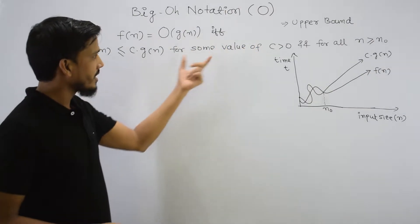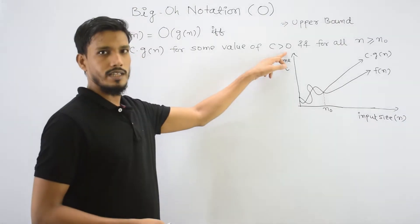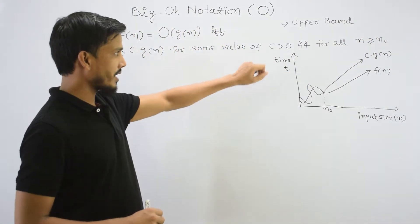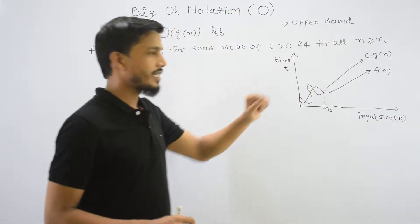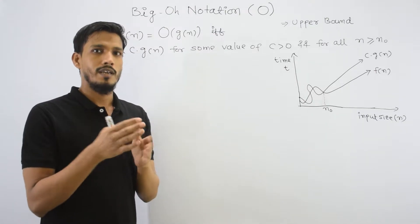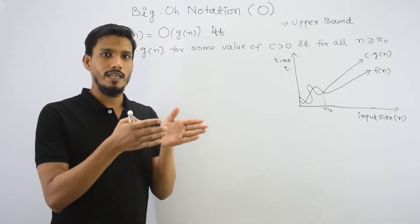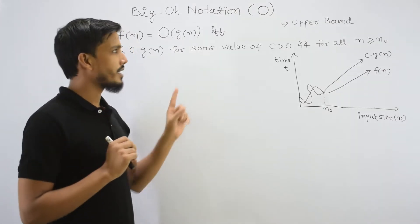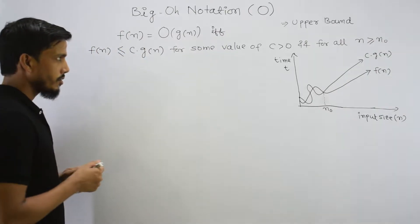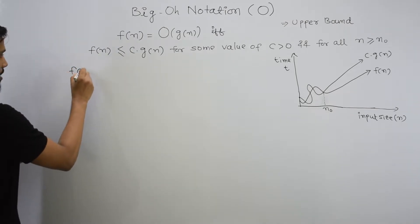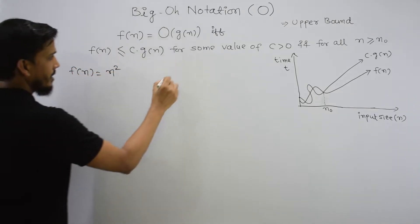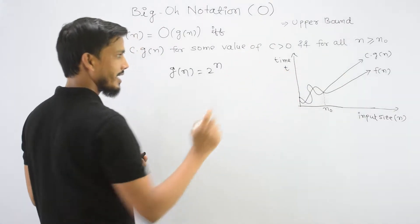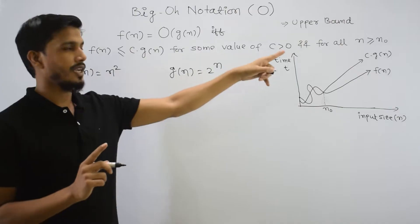The equation f(n) = O(g(n)) is satisfied if and only if f(n) is less than or equal to c dot g(n). This holds for some value of c that is strictly greater than 0 — that is, c is a positive constant — and for all n greater than or equal to n₀. The important things to understand are: what is c, and what is n₀, where n is the input size.